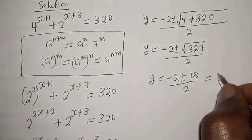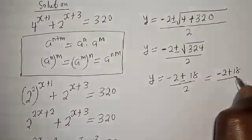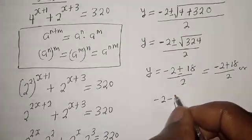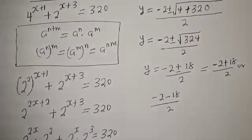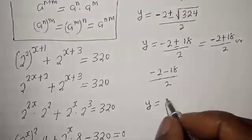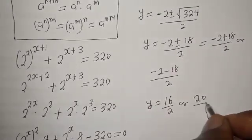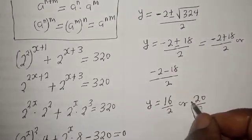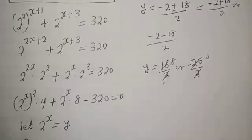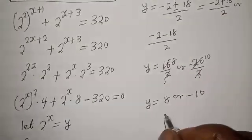So y equals minus 2 plus 18 over 2, which is 16 over 2, giving 8. Or y equals minus 2 minus 18 over 2, which is minus 20 over 2, giving minus 10. Therefore y equals 8 or minus 10.